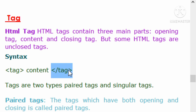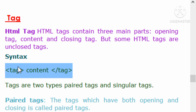The closing tag contains a forward slash followed by the tag name. Almost 99% of the tags follow this same rule: opening tag, content, then closing tag. Whatever name we use to open the tag, we write the same name with a forward slash to create the closing tag. In HTML, we implement tags and place them in angular brackets, and if we open a tag, we must close it.